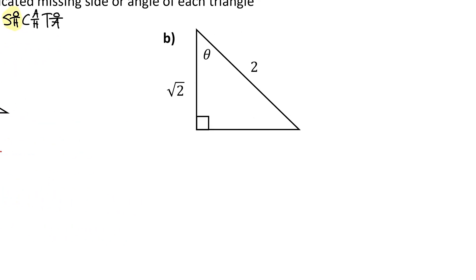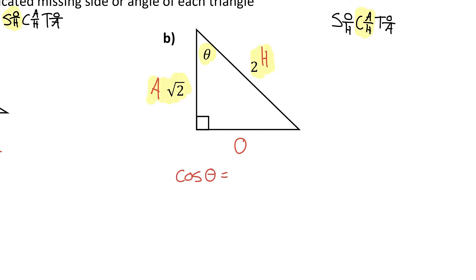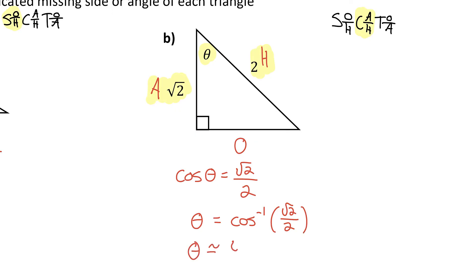In part B, we're trying to solve for a missing angle. Let's label opposite, adjacent, and hypotenuse from that reference angle. The hypotenuse is across from the 90 degree angle. The opposite side is the one across from the reference angle, and the adjacent side is the one touching the reference angle. Because we know the adjacent and the hypotenuse, we'll use cosine. I know that cosine of the reference angle equals the adjacent side, root 2, divided by the hypotenuse, which is 2. When you know the ratio but want the angle, you use the inverse cosine — sometimes called arc cosine — of the ratio, and you'll be able to solve for the angle. You would get 45 degrees.